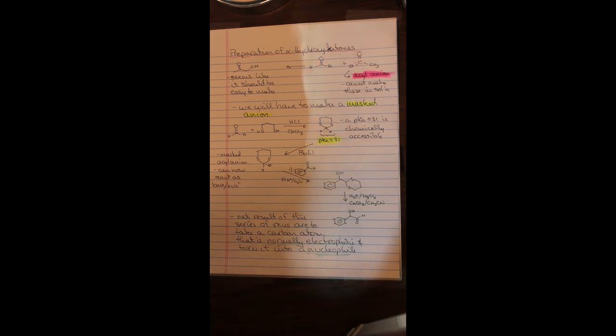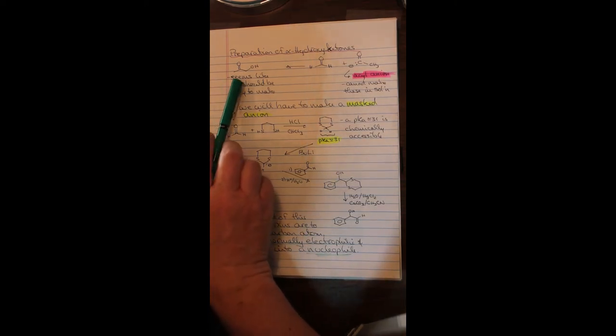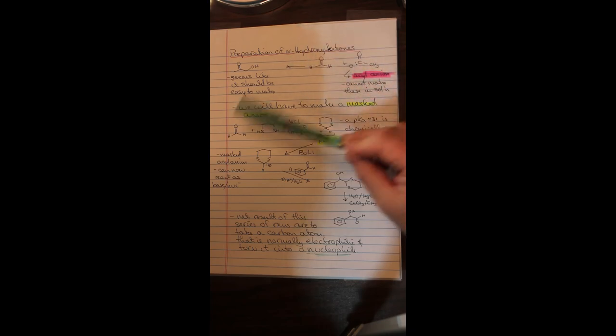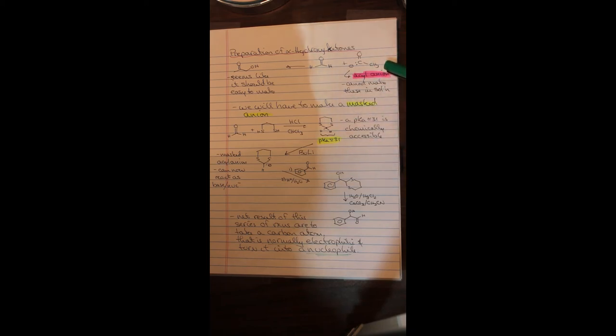The preparation of alpha hydroxy ketones. Now, this is an interesting problem. Now shown over here is an alpha hydroxy ketone. Now, this seems like it should be a relatively easy thing to generate, because you would take an aldehyde, in this case, formaldehyde, and some acyl anion, and react them together. And you should be able to get this product relatively easily. However, the formation of acyl anions chemically in the lab is a lot more difficult than you might expect. Now generation of acyl anions is relatively simple using mass spec. And you can actually see evidence for them in mass spec. But in the lab, we have a great deal of difficulty doing this.